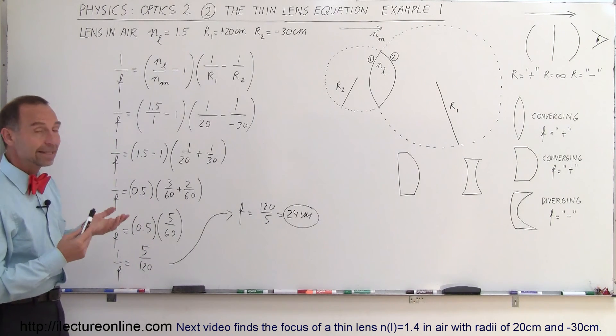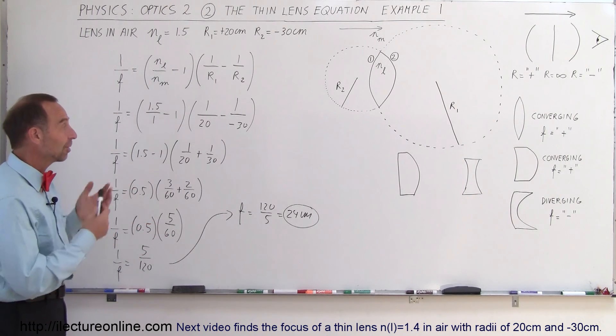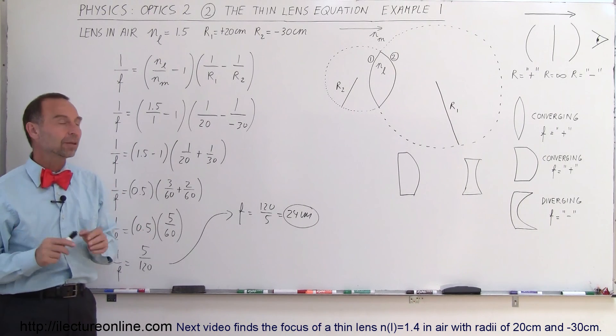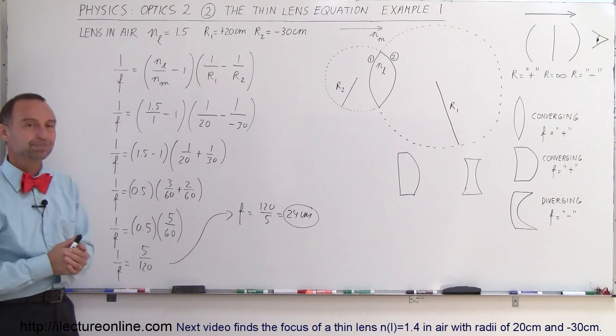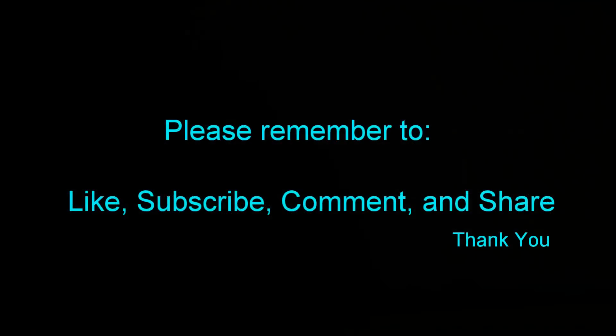So that's how you figure out the focal length of a lens. This is a simple example. On the next one, we'll change things a little bit. We'll actually put it in a different medium and see what the results of that will be.